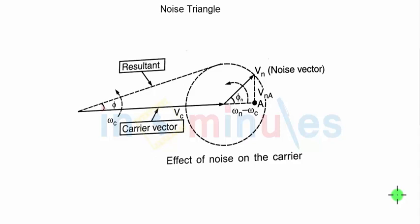So what we have done in this particular phasor diagram which is there on the screen right now is that we have taken a carrier vector whose amplitude is VC. This is my carrier vector here, and on this carrier vector we are superimposing the noise vector VN. It will get superimposed on carrier vector because both VC and VN will not have the same frequencies.